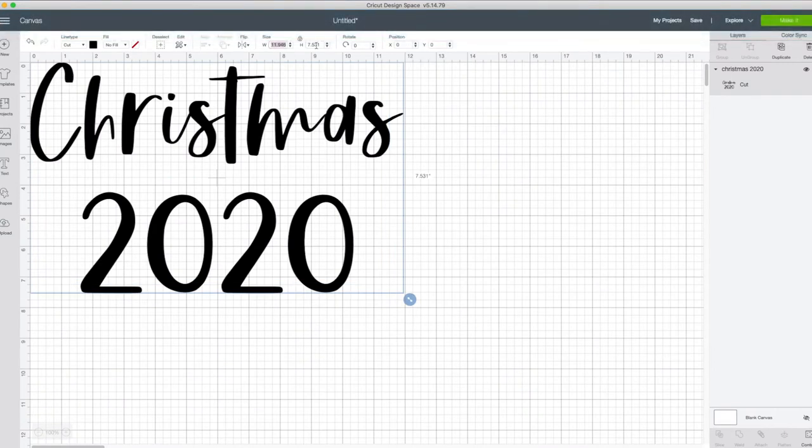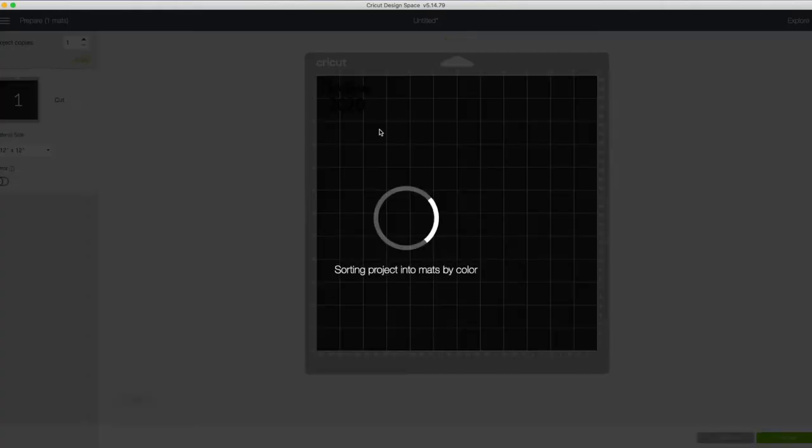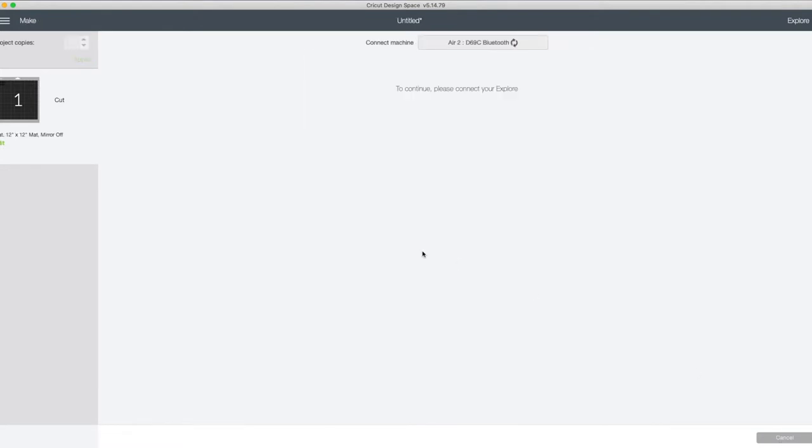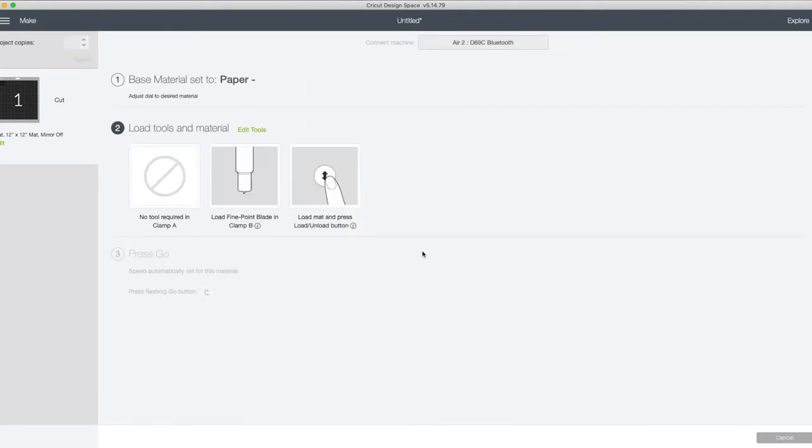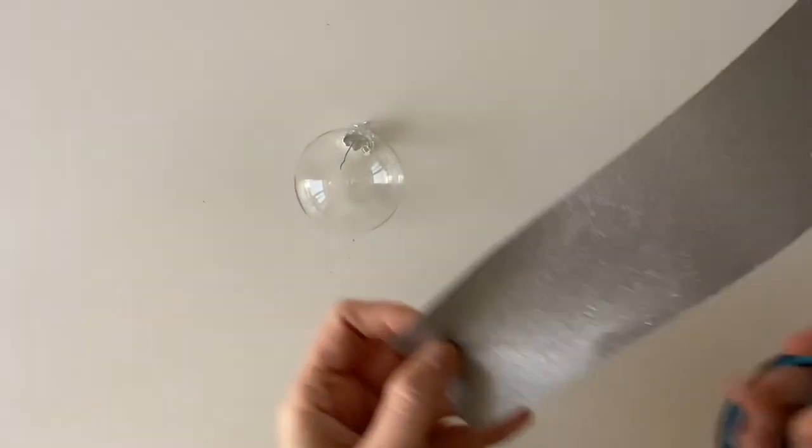Just doing a really simple design as well because it's quite a small bauble, so I didn't want to do anything too intricate. I'm going to cut it in glitter silver, so just making sure I've got the right vinyl selected on my Cricut.